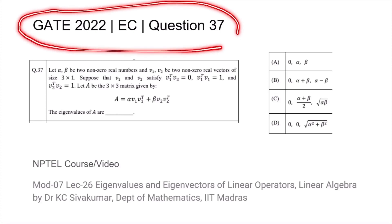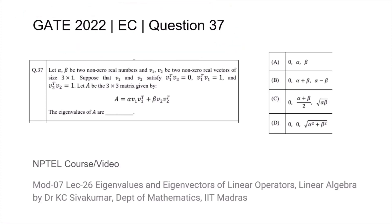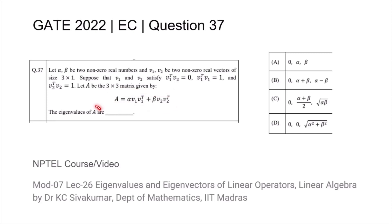This is question 37 from the GATE 2022 EC paper, where we are given that alpha and beta are two non-zero real numbers, and v1 and v2 are two non-zero real vectors of size 3×1. They satisfy that the dot product between v1 and v2 is equal to 0, and the dot product of v1 with v1, and v2 with v2, is equal to 1. A being the following 3×3 matrix, we are asked to find what the eigenvalues of A are.